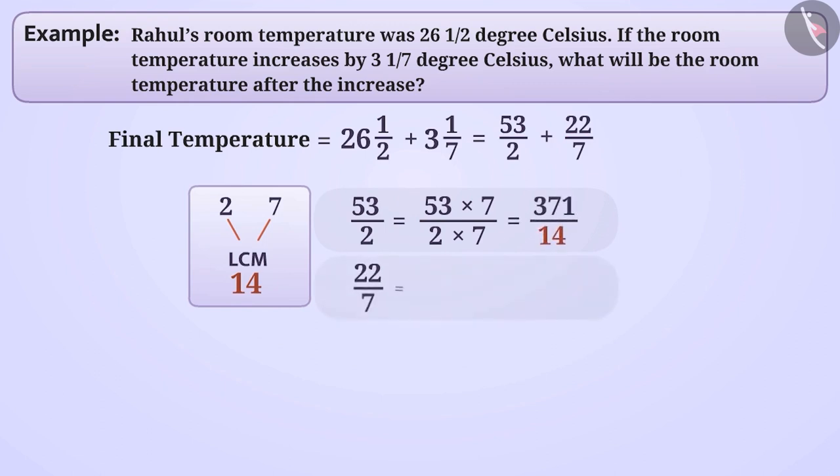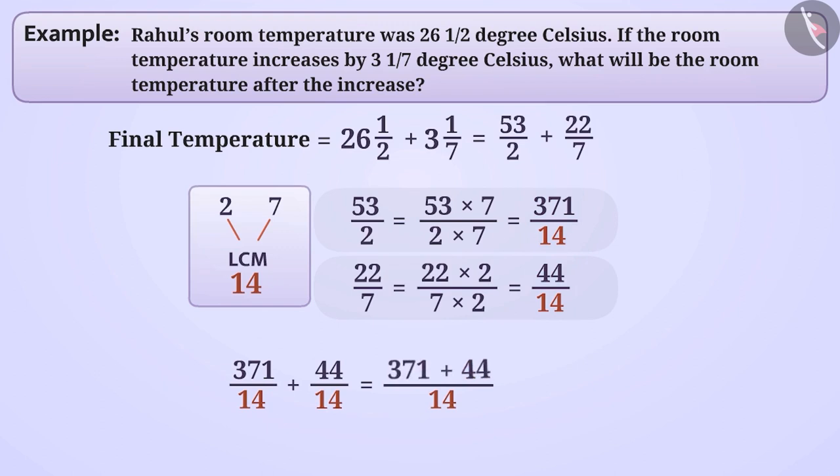Similarly, if we multiply both the numerator and the denominator of 22 by 7 by 2, we will get its corresponding rational number. Then we add them. For this, we will keep the same denominator for each and add numerator. From this, we achieve the result 415 by 14. We can also express this as 29, 9 by 14.